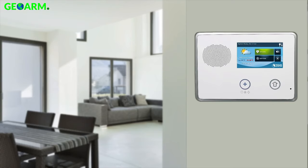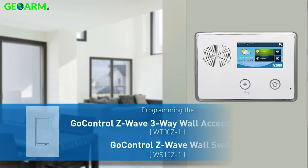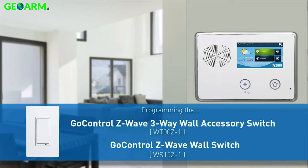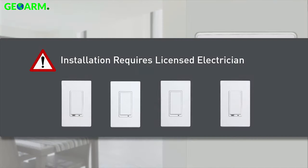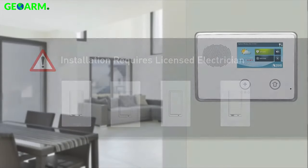Welcome! The following video will demonstrate how to program a GoControl Z-Wave 3-Way and standard wall switch into a GC2 security panel. All lighting products must be installed by a licensed electrician. Once installation is complete, you can begin programming.